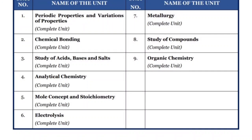For Chemistry, Semester 1 MCQ-based chapters include: periodic properties and variations of properties, chemical bonding complete unit, acid bases salts, analytical chemistry, mole concept and stoichiometry, and electrolysis. In Semester 2 subjective exams, three chapters will be included: metallurgy, study of compounds, and organic chemistry. Remember - chapters from Semester 1 will not be asked in Semester 2, so prepare accordingly without confusion.